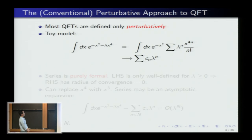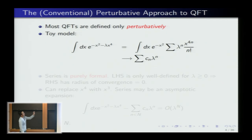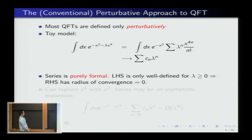To illustrate this methodology, consider the one-dimensional integral of e^{-x²-λx⁴}. You separate the Gaussian part, Taylor-expand the remaining part, then perform an illegal exchange of sum and integral to get a formal series in λ. You can always do this irrespective of convergence. The left-hand side is only well-defined for λ non-negative, which implies the radius of convergence of the series is zero.